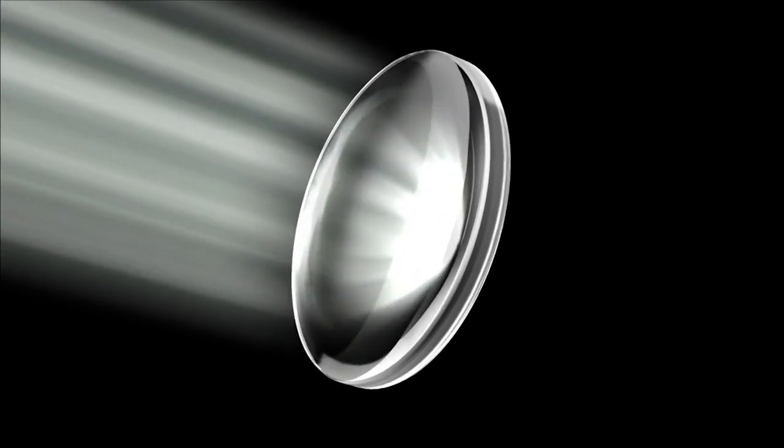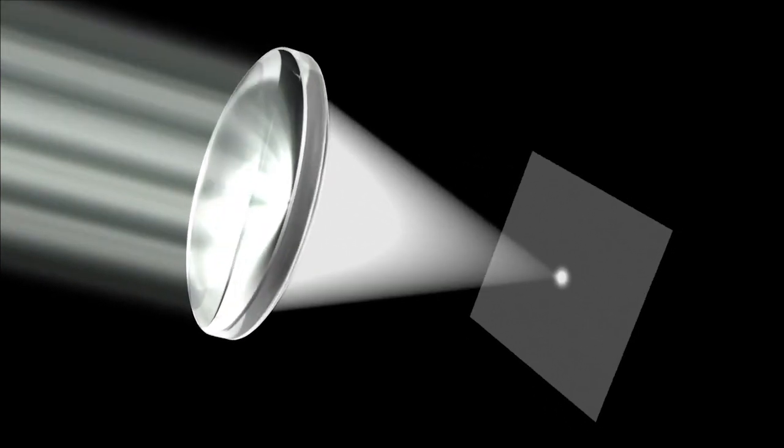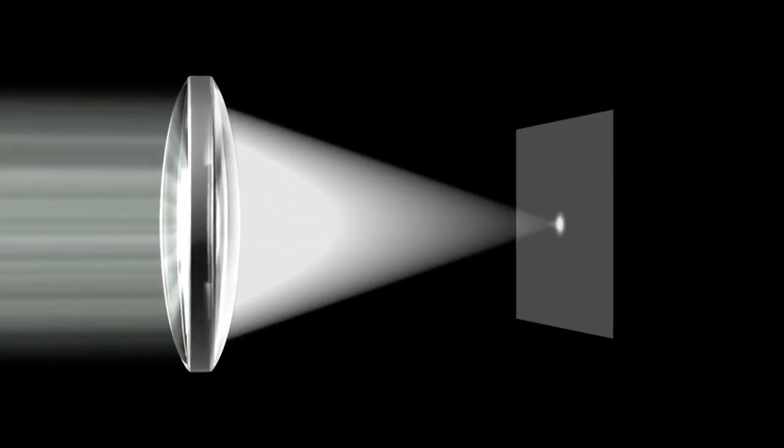This process alone, however, is not enough to produce a sharp image. This is because, strictly speaking, a spherical convex lens alone cannot cause light to converge to a single point.